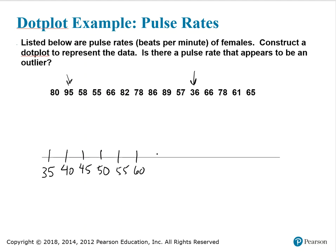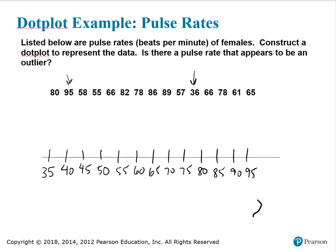Continuing to count by 5's: 60, 65, 70, 75, 80, 85, 90, and 95. Then I place a dot for each one of the data points.